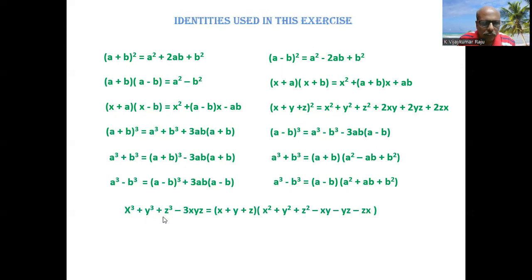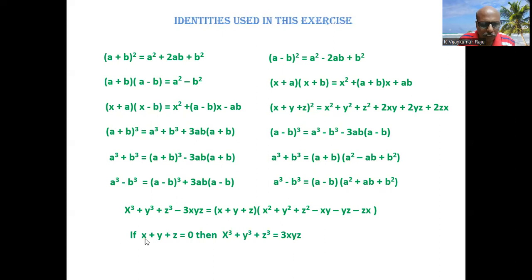The identity x³ + y³ + z³ - 3xyz = (x+y+z)(x² + y² + z² - xy - yz - zx). Now, if x+y+z = 0, then the right side becomes 0, meaning x³ + y³ + z³ - 3xyz = 0, so x³ + y³ + z³ = 3xyz.